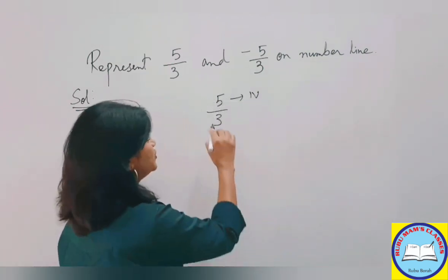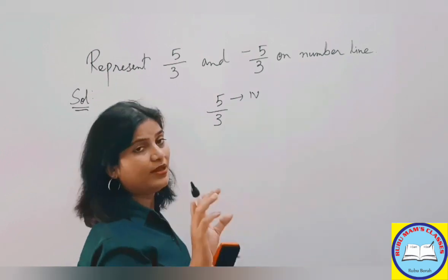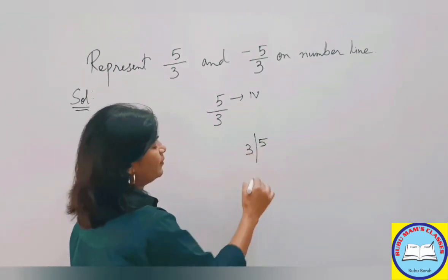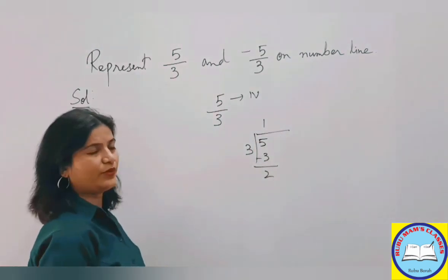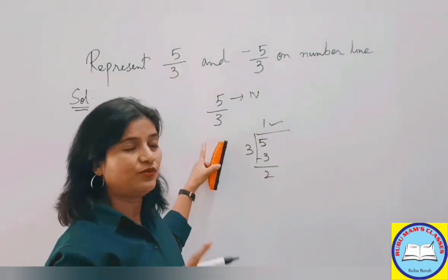So divide 5 by 3. 3 once at 3, so 2. So that means 5 upon 3 would lie between 1 and 2.